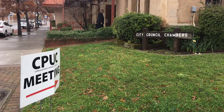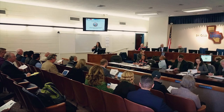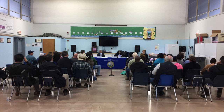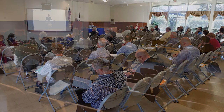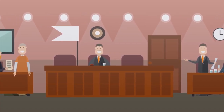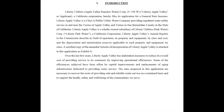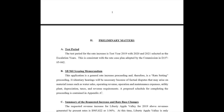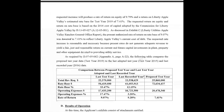A general rate case typically includes several public forums where we gather input from utility customers across the utility's service area. In addition to the public forums, there are also hearings at which the utility and interested parties testify before an administrative law judge. Those hearings are like a trial in court and they are also open to the public. The utilities are required to provide many documents to justify why they think they need the specific funding levels for providing service.